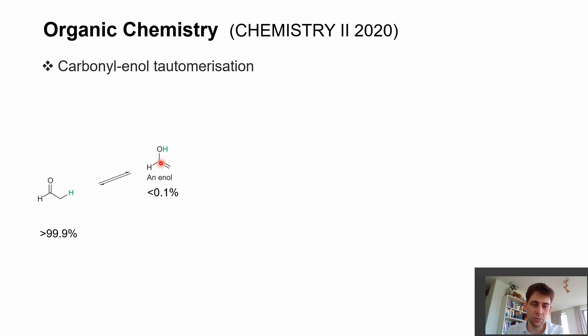In general, this tautomerism and equilibrium is basically lying in such a way that we have in very large excess just this carbonyl component present. But to some degree, we also find this enol component. We can exploit this even if it's just present in a very low ratio to do some reactions with it.